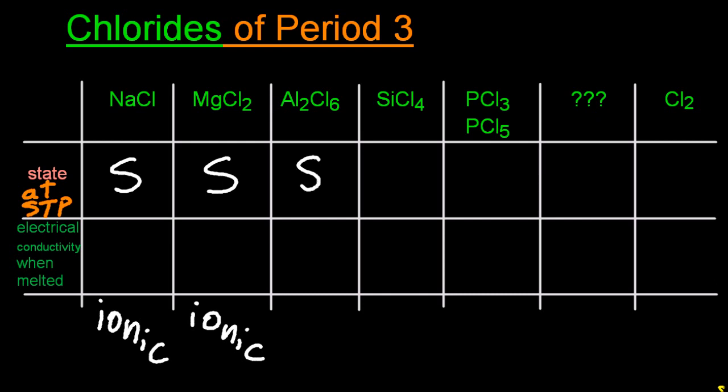Al2Cl6, that's a little tricky. Looking at that, you have to decide, is that ionic or is that covalent? It can actually have aspects of both. There are different ways in different conditions to get different chlorides of aluminium.